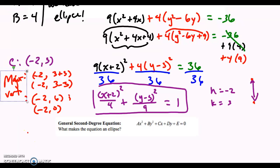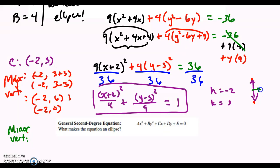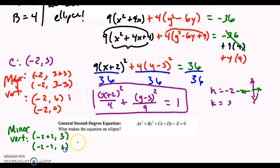For the minor vertices: the minor vertices are going to be affected by the 4 — the b value of 2. I'm going to go right 2 and left 2. If I go right 2 from negative 2, I'm going to be at 0. And going left 2 I'm going to be at negative 4. So I have (−2+2, 3) and (−2−2, 3), which equal (0, 3) and (−4, 3).